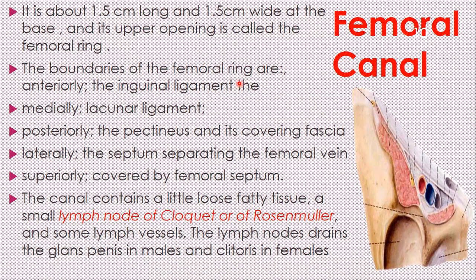The femoral canal is about 1.5 cm long and 1.5 cm wide at its base. Its upper opening is called the femoral ring. We've talked about the femoral triangle, the femoral sheath, and now the femoral canal, and we are also mentioning the femoral ring, which is formed on the upper part of this femoral canal. Its boundaries include the lacunar ligament on the medial aspect.